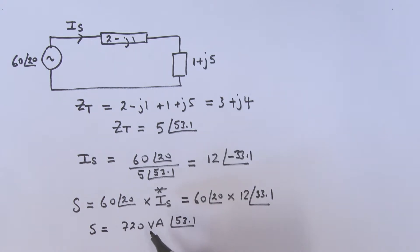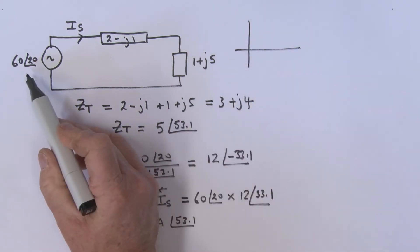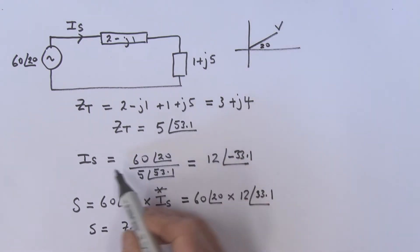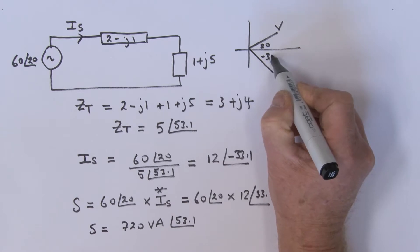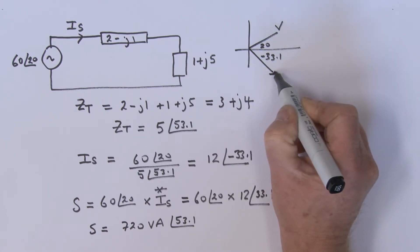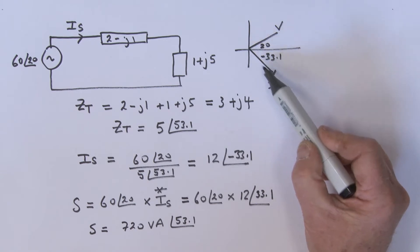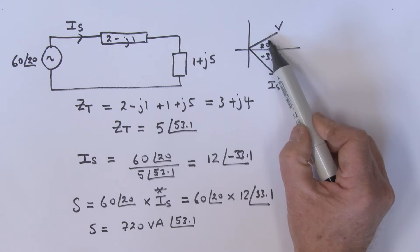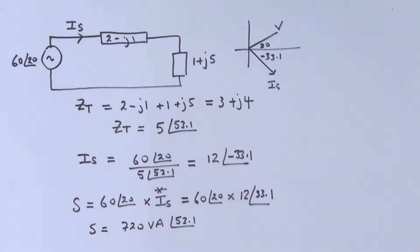Before we leave this page, let's look at those angles. The voltage V has an angle of 20°, and the current I_s has an angle of −33.1°. The angle we're interested in is the relationship between voltage and current — that's why we took the complex conjugate — giving us the correct angle of 53.1°.